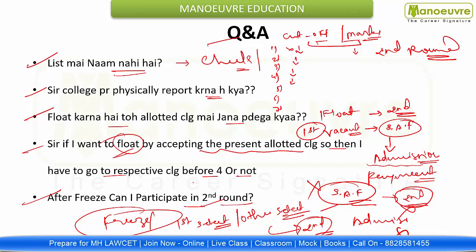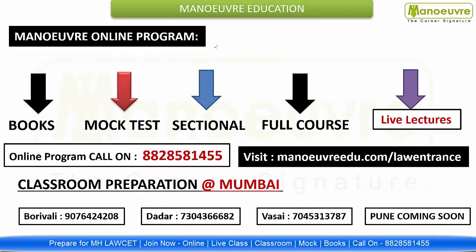Don't worry about the CAP round process. Visit the official website of the particular college, go to the admission notice section. The date is 30th January to 4th February — between this, take admission in the particular college, go for verification of documents. For those who did not get any college in the first round, all the best for the second round. You will get a top college — stay focused. For 2021 and 2022 preparation, call us on 8828581455 or visit manualadu.com/lawentrance to enroll for books, mock tests, sectional and full courses. Subscribe the channel — there are more videos yet to come. Thank you very much, all the best for your career, see you in the next video.